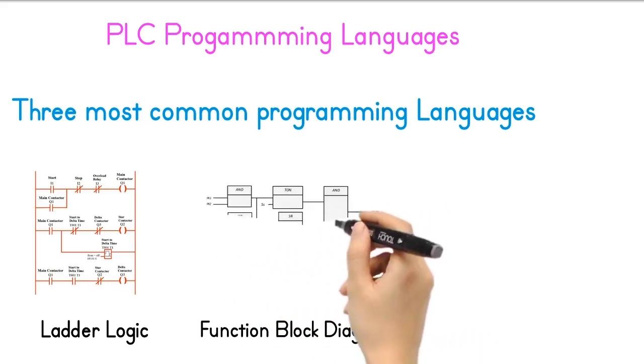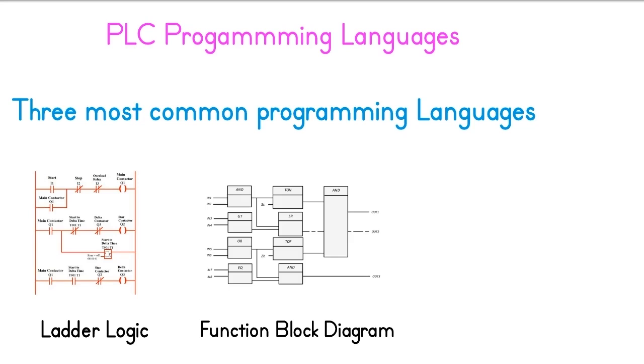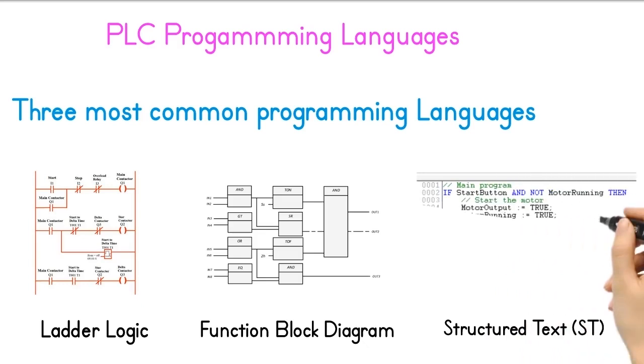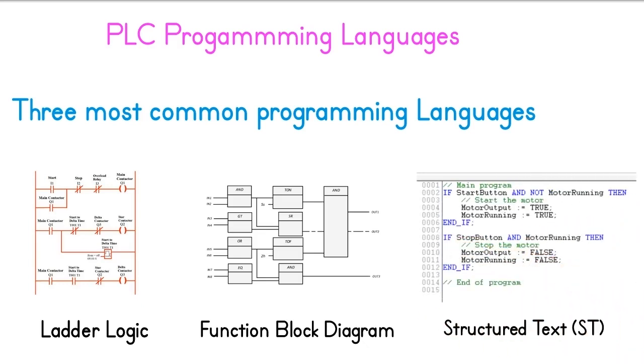Function Block Diagram is also a graphical programming language that uses function blocks to represent the control system's logic. Structured Text is a high-level, text-based programming language similar to traditional programming languages like Pascal, C, or Python.